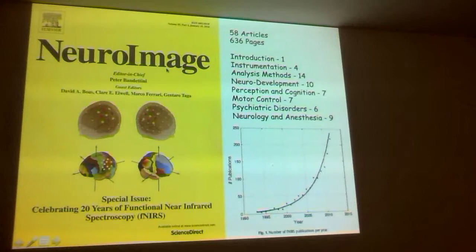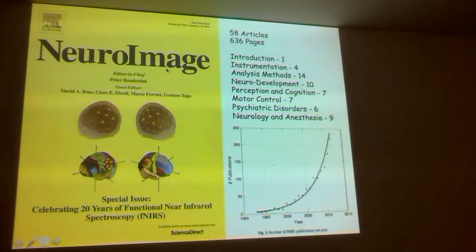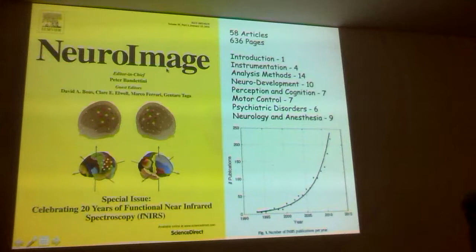We actually had like 120 articles submitted, so it was a lot of work to handle the reviews of 120 articles and half of them were rejected. But nonetheless, 58 articles were published in this issue. So if you want to know the present state of the art of functional near infrared spectroscopy, just go look at this issue of NeuroImage.